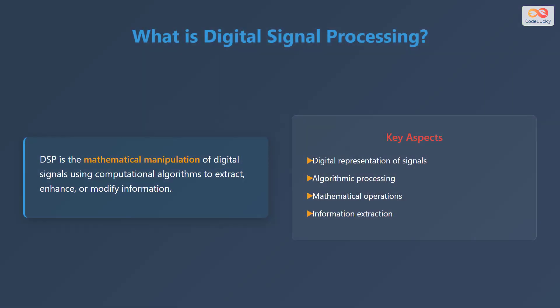What exactly is digital signal processing? At its core, DSP involves the mathematical manipulation of digital signals. This is achieved using computational algorithms to extract, enhance, or modify information contained within those signals. The key aspects are the digital representation of signals, algorithmic processing, mathematical operations, and the extraction of information.